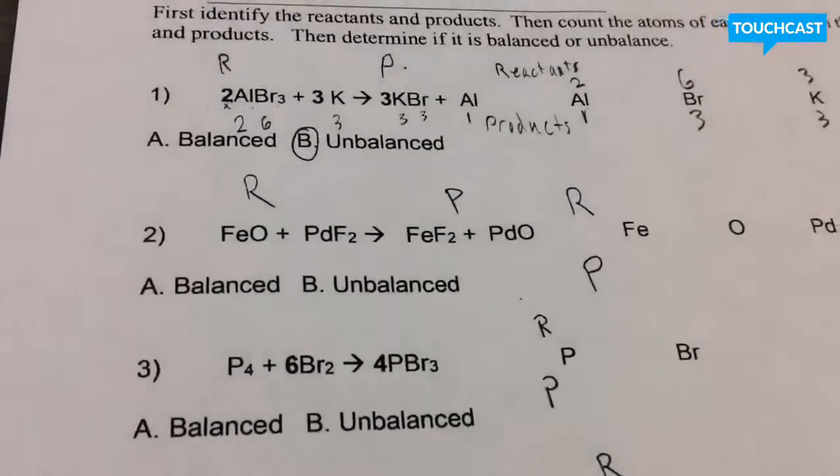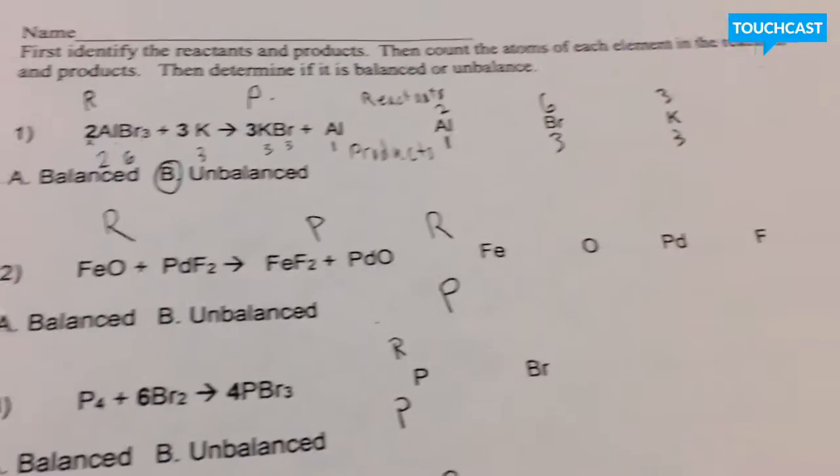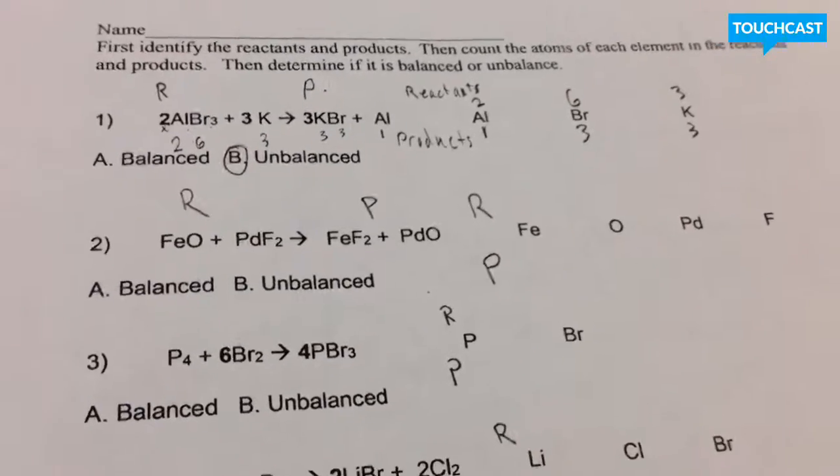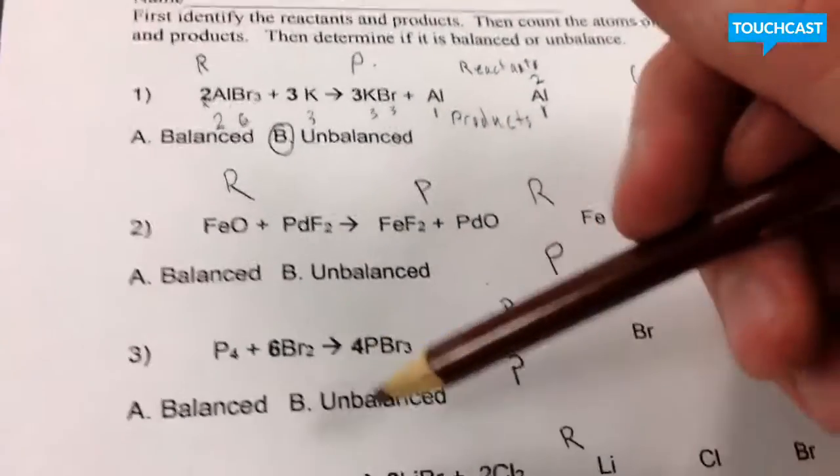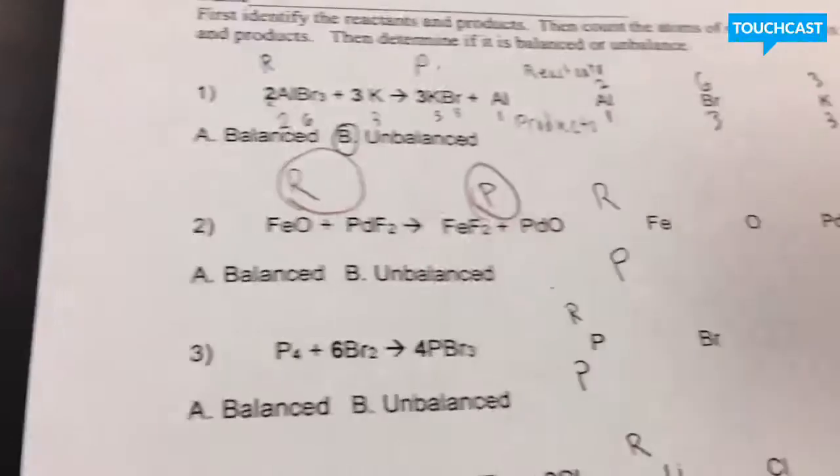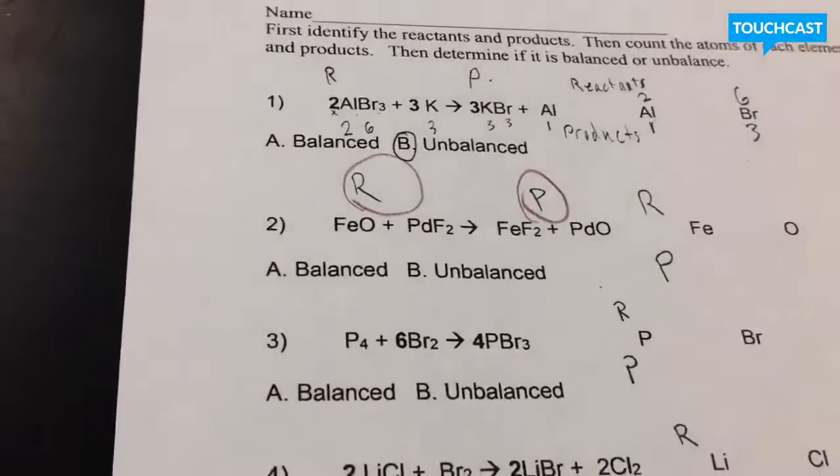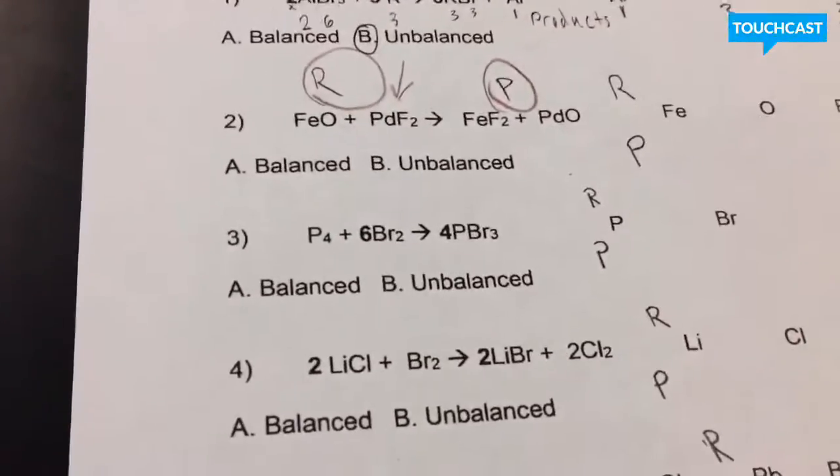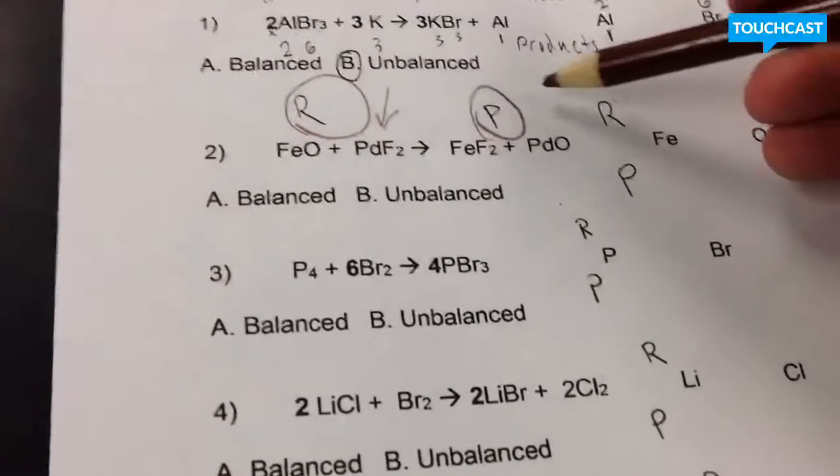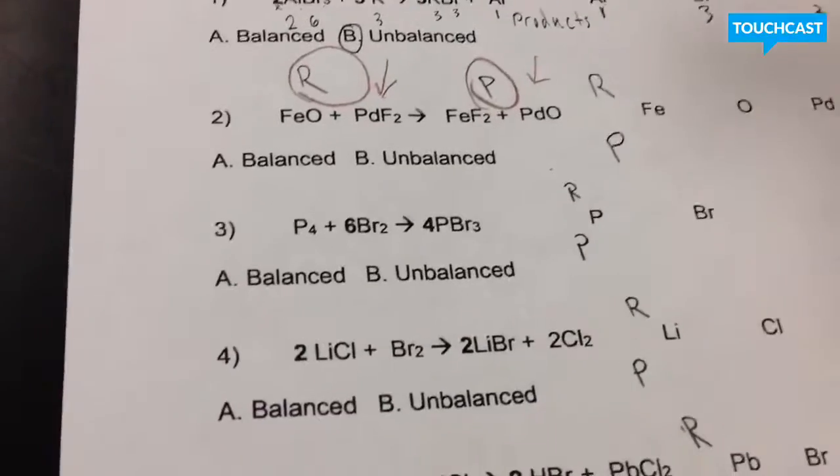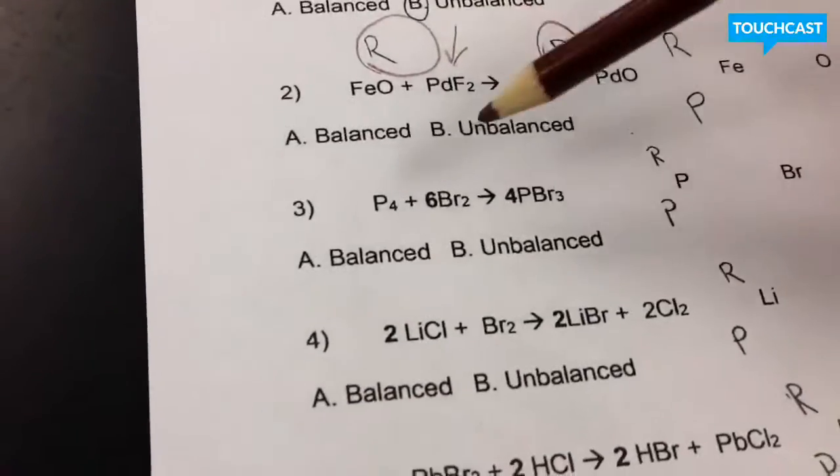Now basically what you're doing here is balancing equations. It looks a little confusing at first, but this is designed to make it a lot easier on you. First step is you need to identify our reactants and our products here. Reactants always are at the beginning, so they're always going to be here at the beginning.